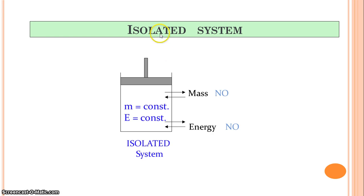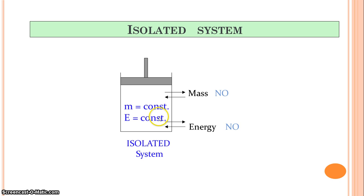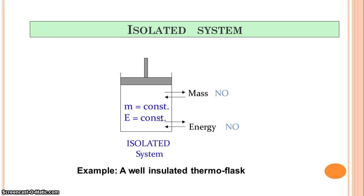The second type is an isolated system. These are systems in which there is no mass transfer and no energy transfer — meaning the mass and energy of the system remain constant. A very good example of an isolated system is hot coffee in a well-insulated thermos flask. The tea or coffee stays as it is because there is no mass and no energy interaction between the system and the surrounding.